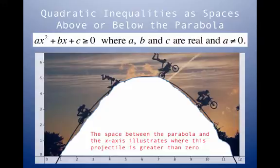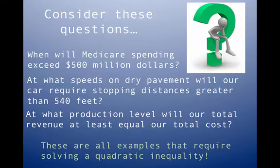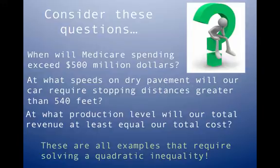Zero here means the x-axis, and the parabola is above the x-axis between the x-intercepts. This comes up a lot in real-world questions: when will Medicare spending exceed 500 million dollars? At what speeds on dry pavement will a car require stopping distances greater than 540 feet? At what production level will total revenue at least equal total cost? These are all quadratic inequalities expressed in plain English.